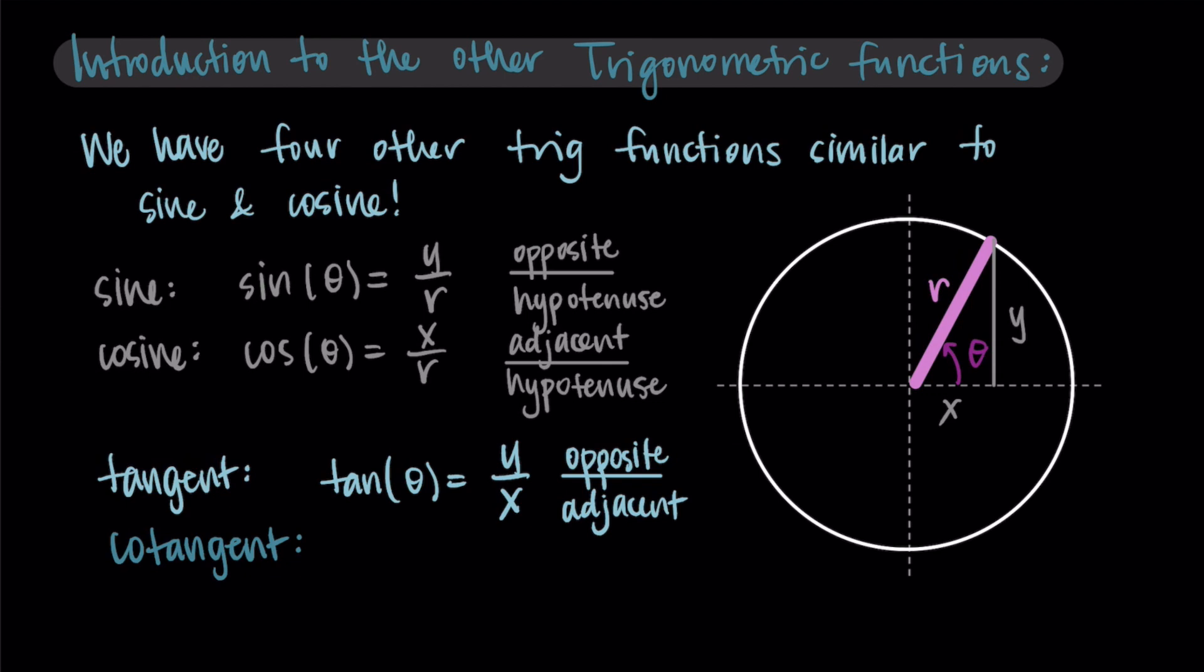Then cotangent is our first trig function that's the opposite of one of our others. Cotangent is the reciprocal of tangent. So cotangent of theta is x over y, or adjacent over opposite. We just swap the order instead of y over x. For cotangent, we have x over y.